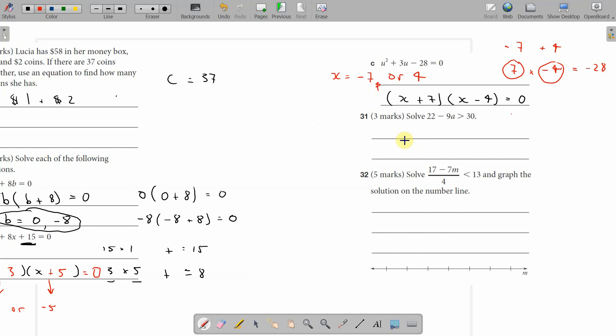Question 31: solve 22 minus 9a is greater than 30. Moving things around, take away the 22. We're left with minus 9a is greater than 8. Divide by minus 9, and this is where we've got to remember: when you divide or multiply by a minus, the sign reverses. So a is less than 8 over minus 9.